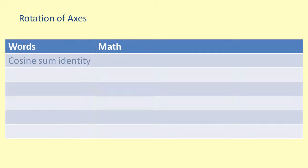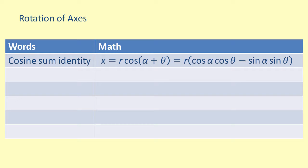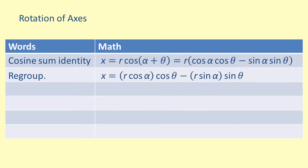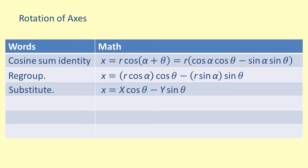Now we can derive the rotation of axes formulas. Starting with the x term, write the cosine identity for the sum: x equals r times cosine of the quantity alpha plus theta, which equals r times the quantity cosine of alpha times cosine of theta minus sine of alpha times sine of theta. Eliminating parentheses and grouping r with the alpha terms, then substituting capital X equals r times cosine of alpha and capital Y equals r times sine of alpha, gives us the rotation of axes formula: x equals capital X times cosine of theta minus capital Y times sine of theta.